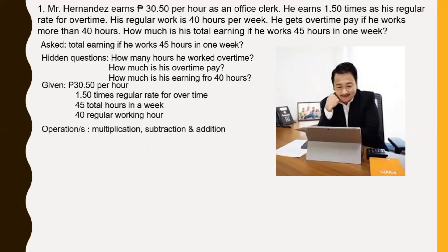We are asked what operation to be used. So we have multiplication, subtraction, and addition. Now, what should be the number sentence? We have 30 pesos and 50 centavos times 40 plus 30 pesos and 50 centavos times 1.50 times the difference of 45 and 40 equals N. So this is our number sentence.